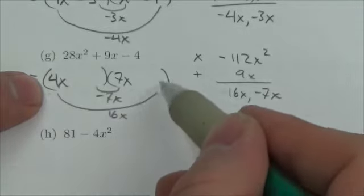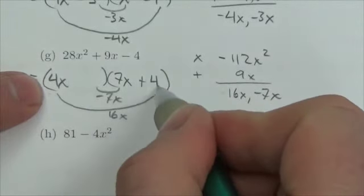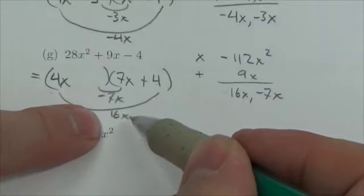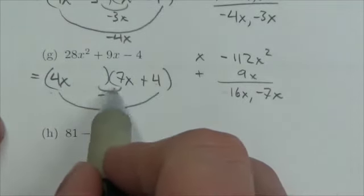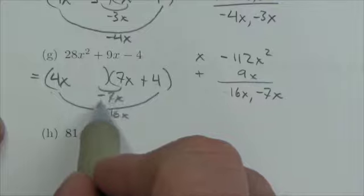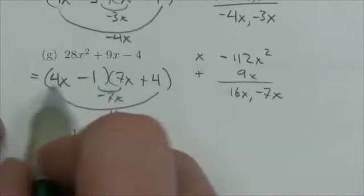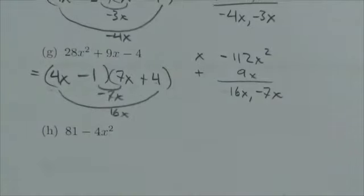If this is 4x, this over here has to be 4, so that when you multiply those together we get 16x. And if this is 7x and I need this inner product to be negative 7x, well, this just has to be minus 1. And so there we go, I factored: 4x minus 1 times 7x plus 4.